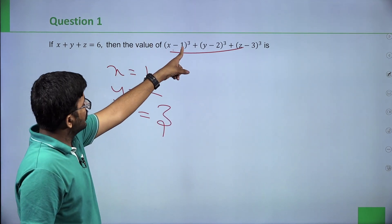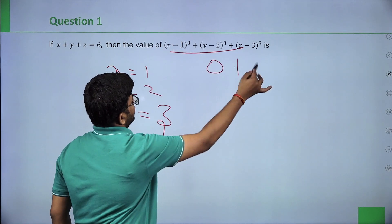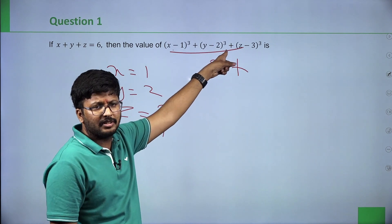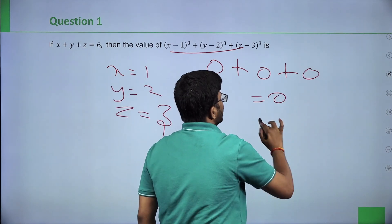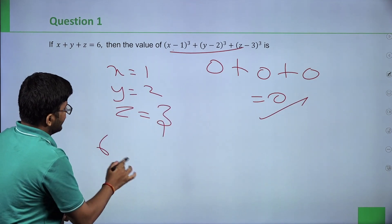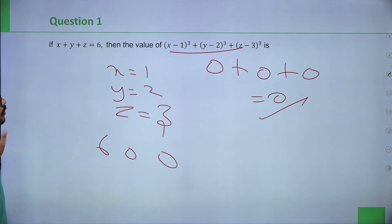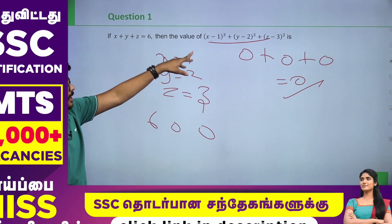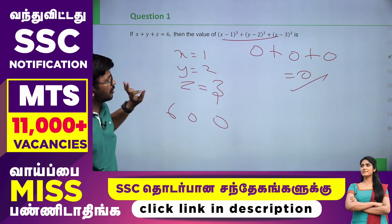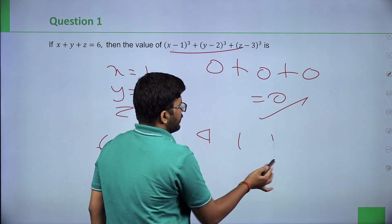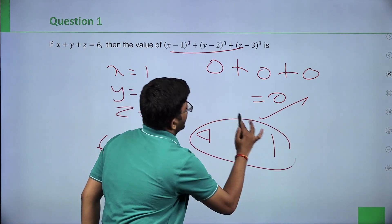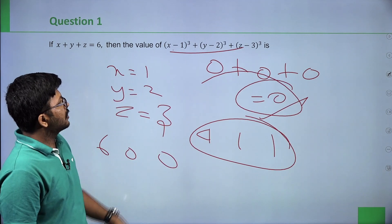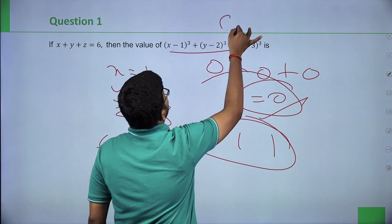Solving: x minus 1 whole cube = 1 minus 1 = 0, so 0 cube is 0. y minus 2 whole cube = 2 minus 2 = 0, so 0 cube is 0. z minus 3 whole cube = 3 minus 3 = 0, so 0 cube is 0. Therefore 0 plus 0 plus 0 is 0. You can also try 6,0,0 or 4,1,1 — any set gives 0. So x minus 1 whole cube plus y minus 2 whole cube plus z minus 3 whole cube equals 0.